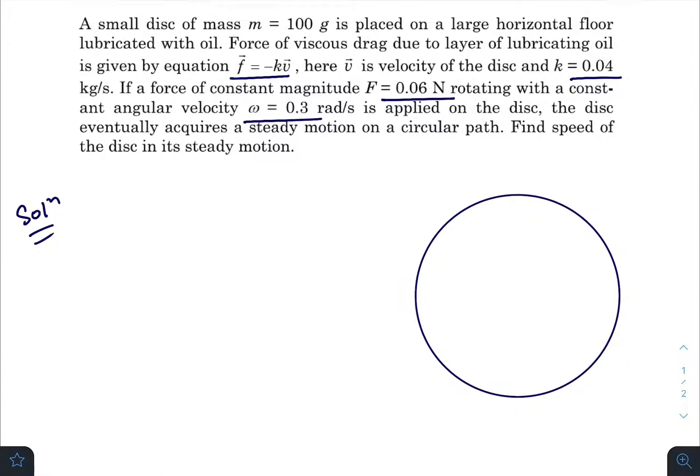In the steady motion, in circular motion, if you draw the free body diagram of the small disc while standing on the disc, the velocity of the disc is in the tangential direction.